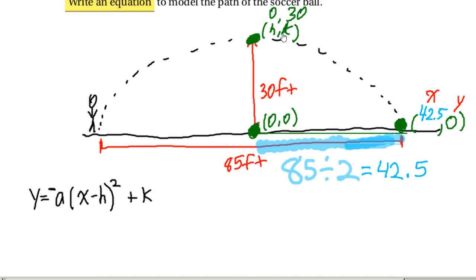Remember, we already found out that h was 0 and k is 30. So if I just rewrite this, I can see that this is y equals negative a, x, wait a minute, this was a 0 minus 0. Well, that's just going to leave me with x, so I can just leave this as squared, plus k. We just found out that k was really the number 30.